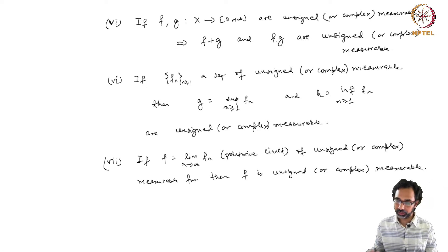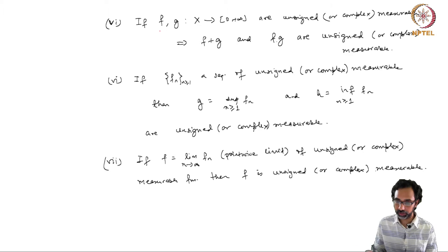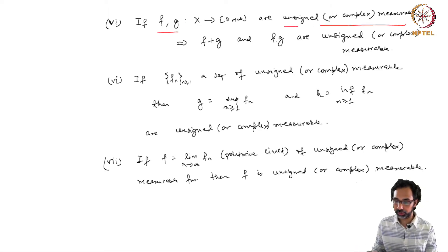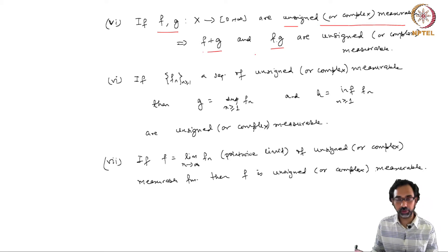Next, consider the next three properties. The first one says that if you have two unsigned or complex measurable functions f and g, then the pointwise sum and pointwise product are also unsigned measurable or complex measurable.